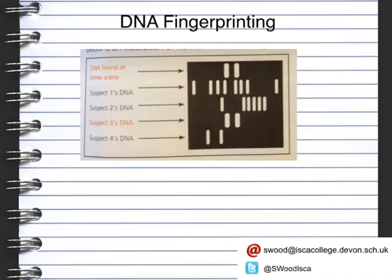You can see this DNA trace here — you've got the DNA found at a crime scene and then you've got four suspects with their DNA. This represents the results that are found, and you can see that Suspect 3 has the same DNA as that found at the crime scene. Modern TV programs such as Hawaii Five-0, NCIS or CSI often feature DNA fingerprint databases.